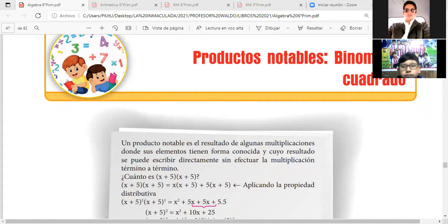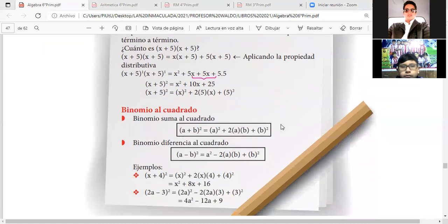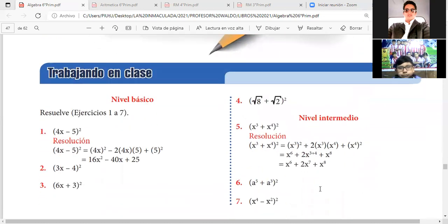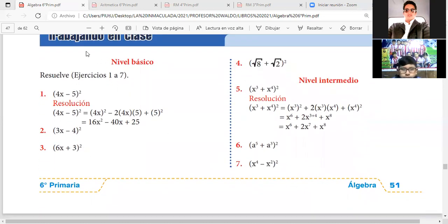En el libro de Álgebra, Productos Notables, Binomio al Cuadrado. Ya hemos visto esto en nuestro cuaderno y hemos desarrollado algunos ejemplos. Vamos a ir a desarrollar directamente los problemas que tiene preparados el libro.